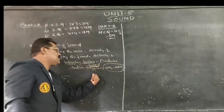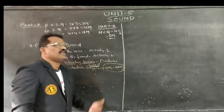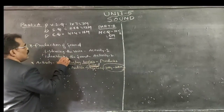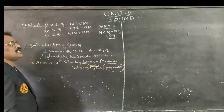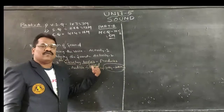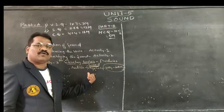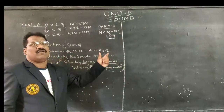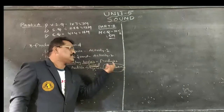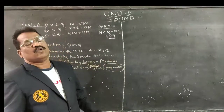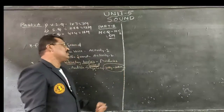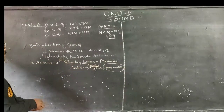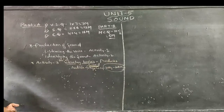If the frequency is lower than 20 Hz or higher than 20 kHz, we cannot hear that particular sound. So not all vibrating bodies produce audible sound — those vibrating with low frequency or very high frequency cannot be heard. But within an audible range of 20 Hz to 20 kHz, if we make a body vibrate, then we can hear that particular sound.